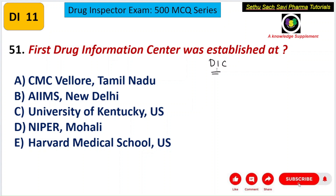The first Drug Information Center was established at the University of Kentucky, US. So the correct answer for this question is C — University of Kentucky, US.